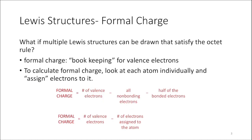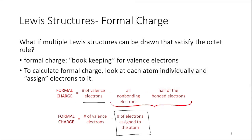To consider formal charge, we are going to look at our Lewis structures and assign a formal charge to each of the atoms. To assign the formal charge to each atom, we look at the number of valence electrons that atom has minus the number of electrons assigned to it in the Lewis structure. The assigned electrons include all of the non-bonding electrons — all the lone pair electrons — and half of the bonded electrons.